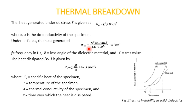For a given loss angle and applied stress, the heat generated is directly proportional to frequency — as seen in the W_AC formula. Hence thermal breakdown is more severe at high frequencies. This gives the thermal breakdown voltages of various materials under DC applications. The conclusion is: for AC, if there is a rise in frequency, the heat generated increases significantly, making it of great importance to choose the correct insulator size considering thermal breakdown.